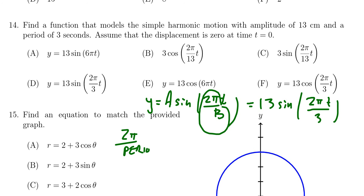And so we end up with the correct model being 13 sine of 2 pi over 3 t, which we see is then choice D.